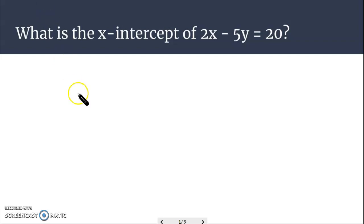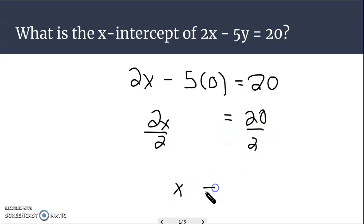First question here, finding the x-intercept. To find an x-intercept, all you need to do is substitute in a 0 for y. We're going to put a 0 in for y. 5 times 0 is 0, so that just leaves us with 2x equals 20. We can divide both sides by 2, and we get x equals 10. Our intercept is x equals 10. If we were to graph this equation, it would intercept the x-axis at 10.